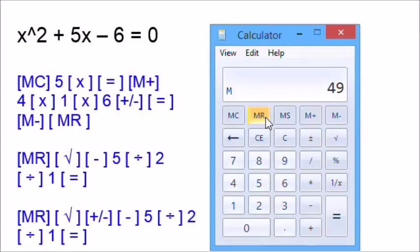First root. We will go memory recall square root minus 5 and take advantage of the chain mode divided by 2 divided by 1, which is 1 for the first root. The second root, we will do memory recall square root chain sign minus 5 again divided by 2 divided by 1. So our roots are 1 and negative 6.